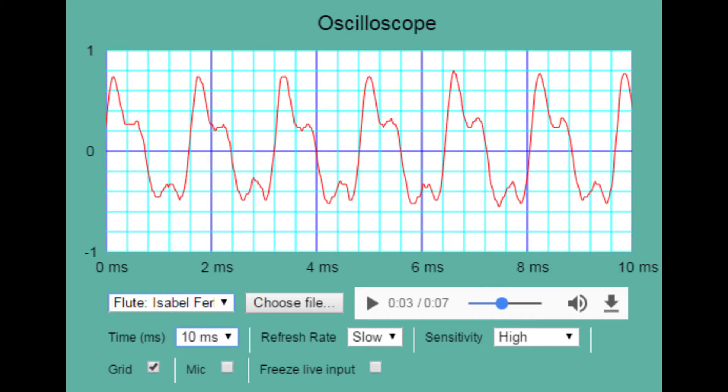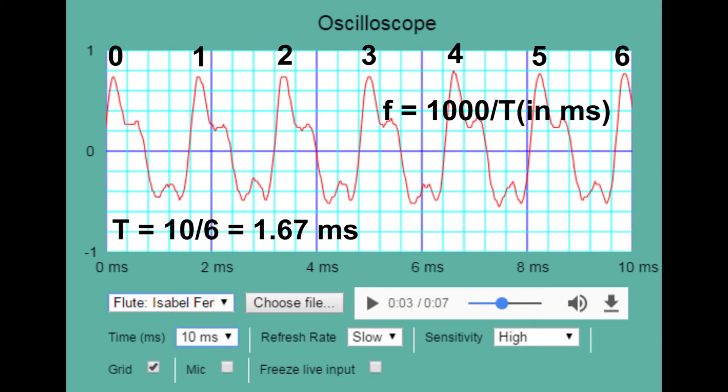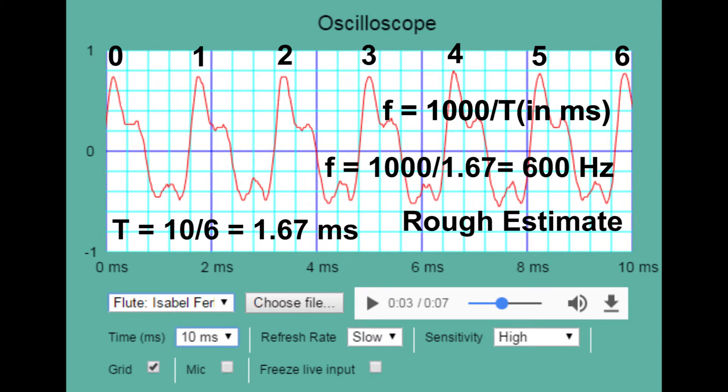It is best to count several periods. I am going to say that we have six periods in the time interval of 10 milliseconds to obtain a quick estimate. Therefore, our period is about 1.67 milliseconds. To get the frequency, you divide your milliseconds into 1,000. The estimate is 600 hertz.